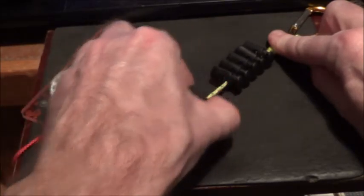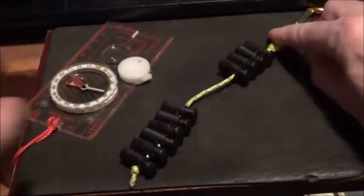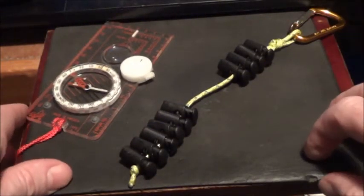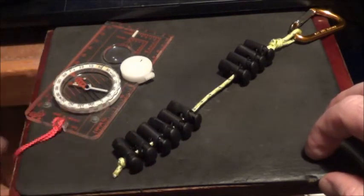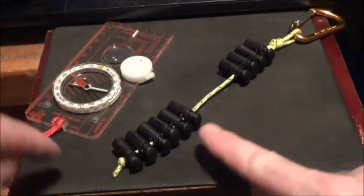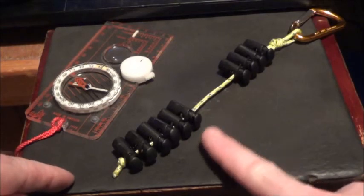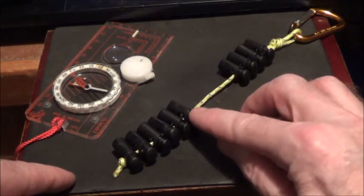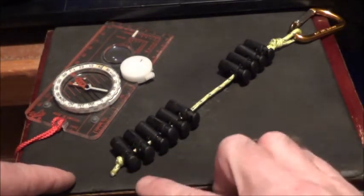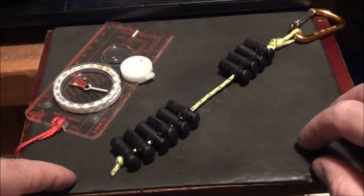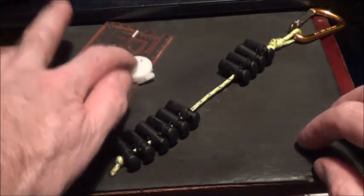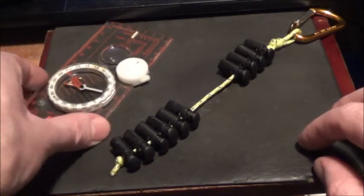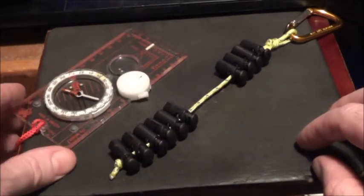Say for instance you've reached a location or an attack point or you've just stopped for a rest, you've got a reference of how far you've actually walked. All you need to do is just count the toggles: one, two, three, four, five, six. So in this case you've walked 600 metres and also it'll be showing six on your compass as well if you're using a pace counter on your compass.